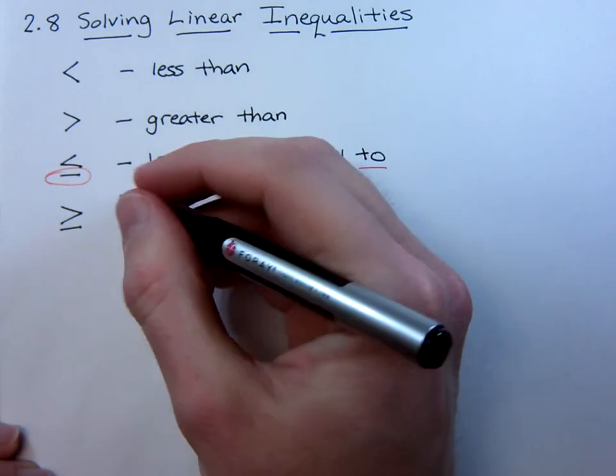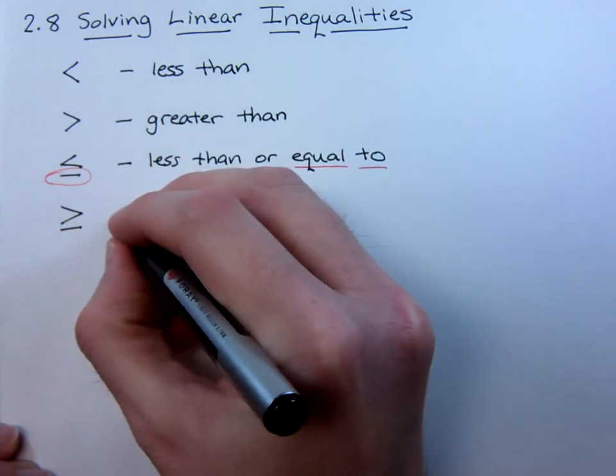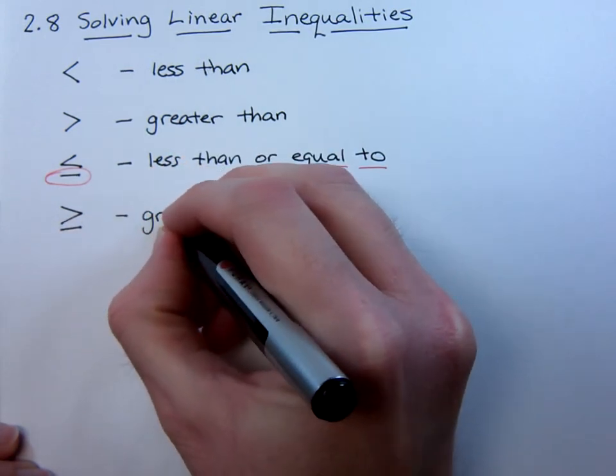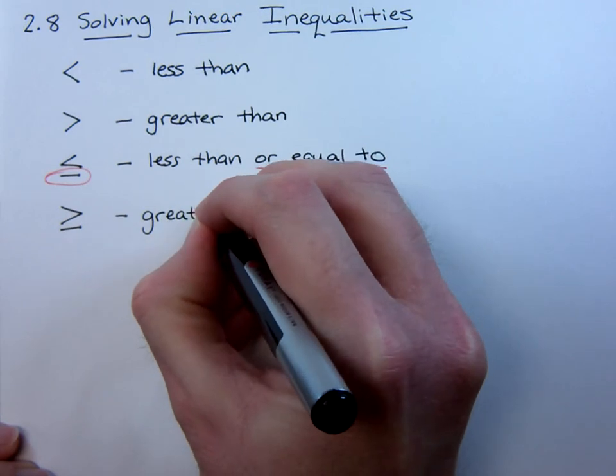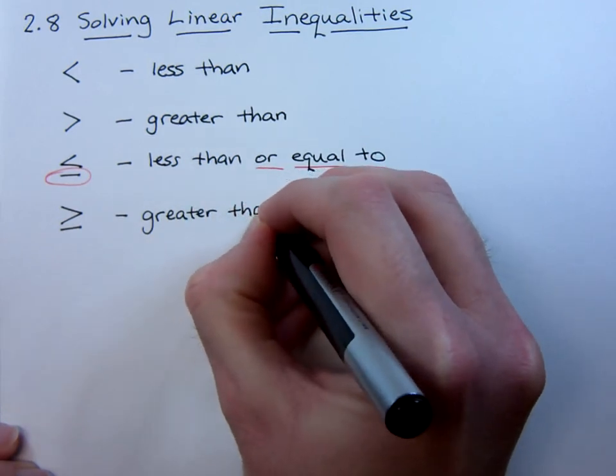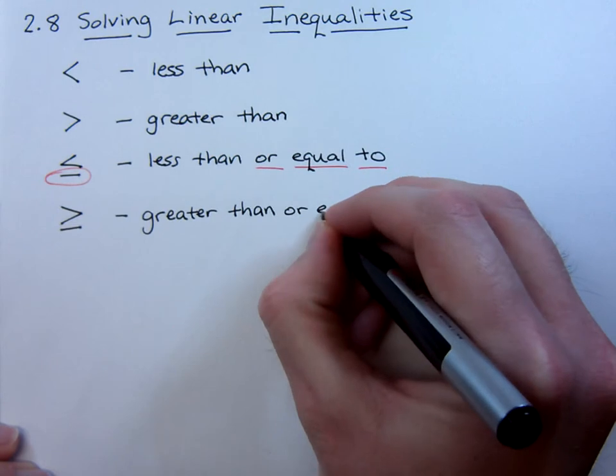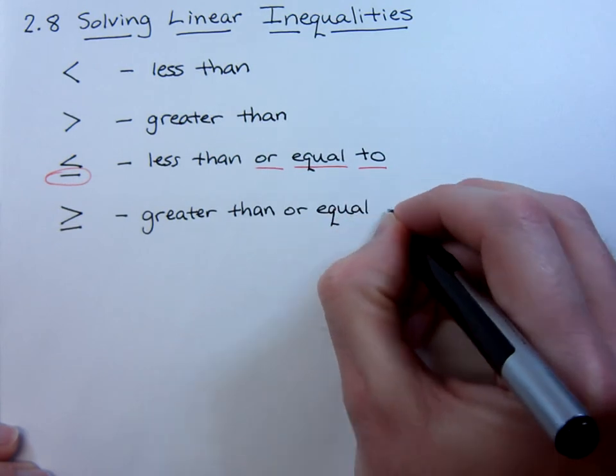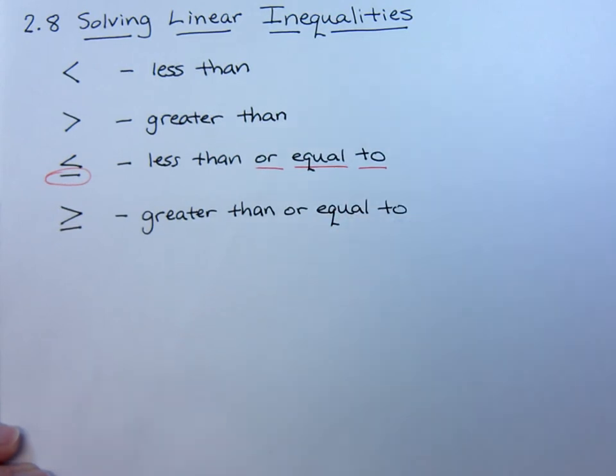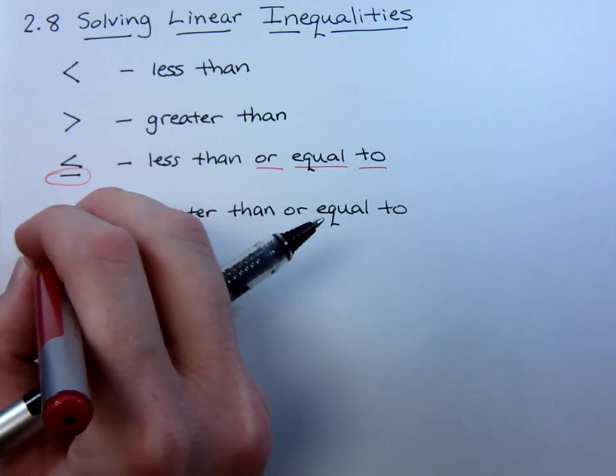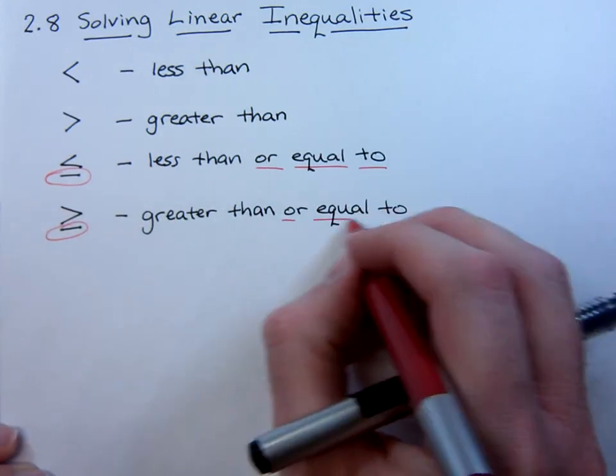Much the same as this next symbol has that little extra piece right there. And that's going to mean, you guessed, greater than or equal to. And again, this little symbol right here is what gives us the or equal to part.